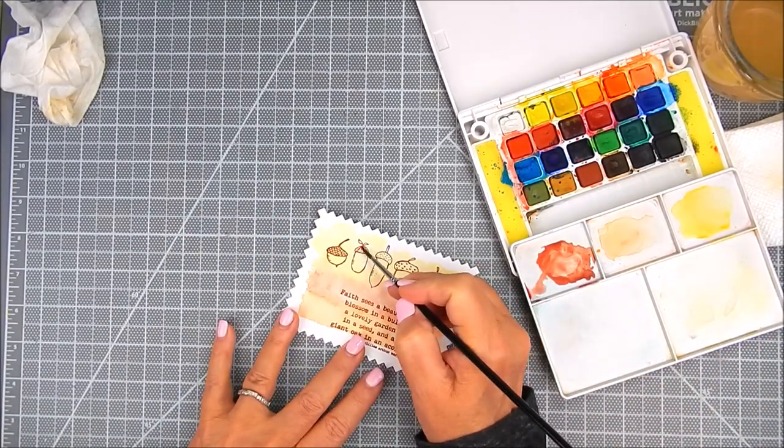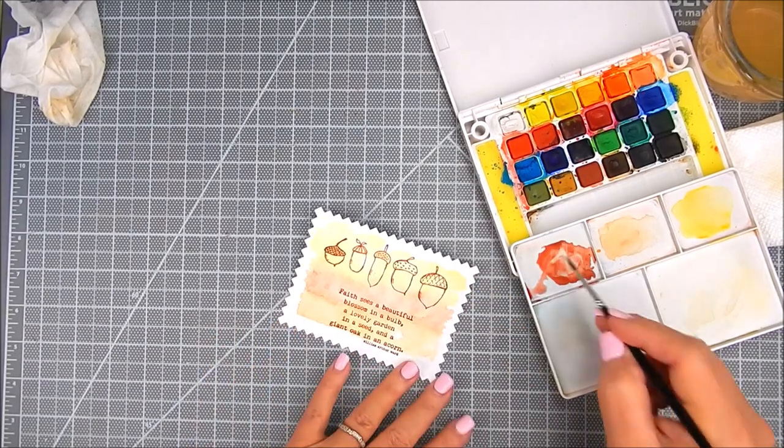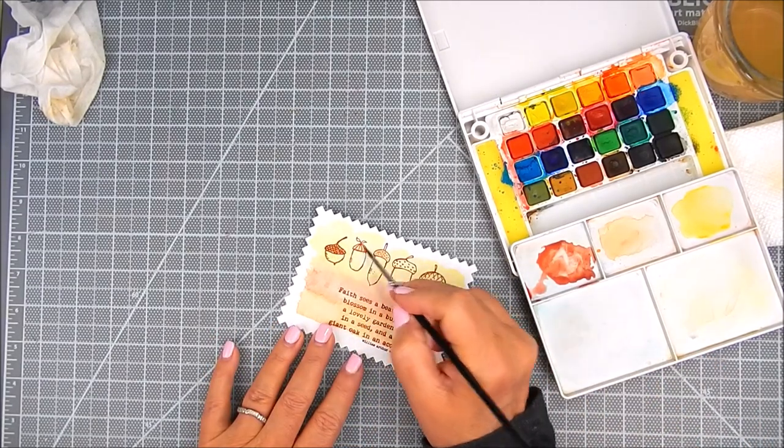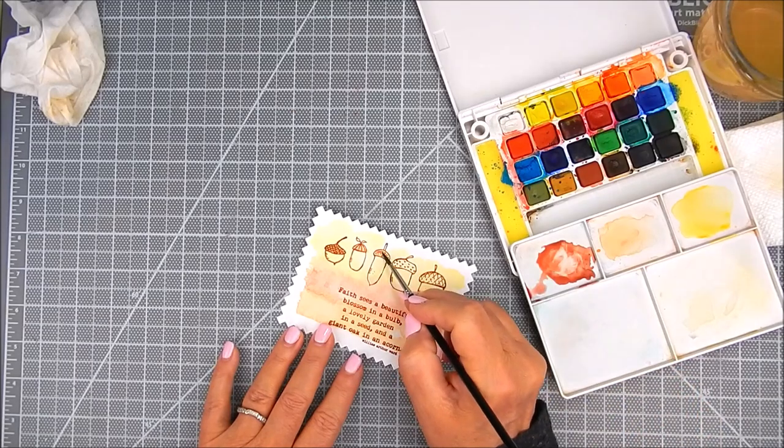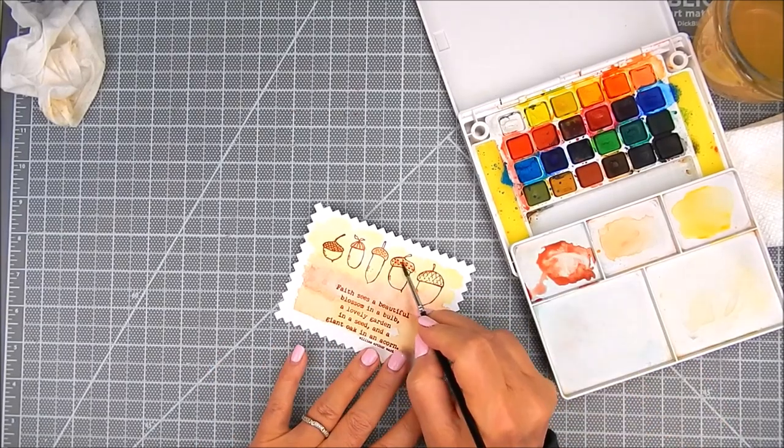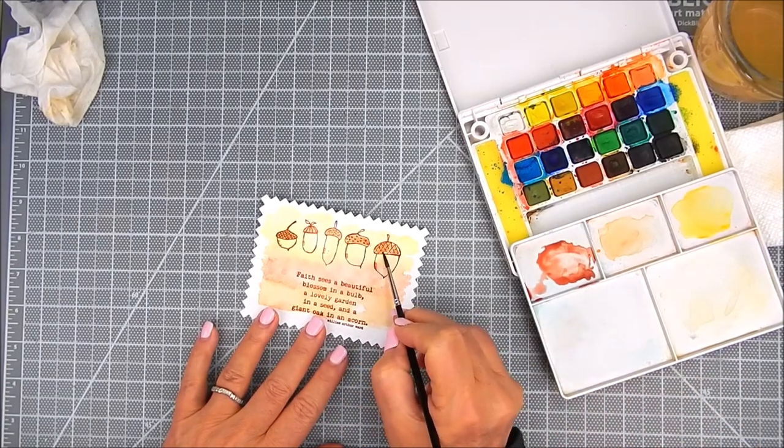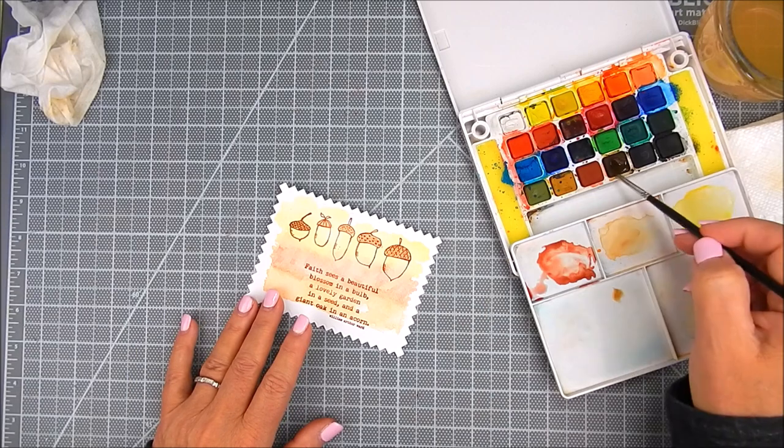Now onto the acorns. I'm adding light watercolor, very light, and I'm going to come in later with pencils and do more shading. I come in with more of the rust color.